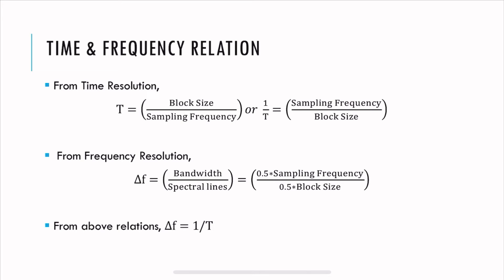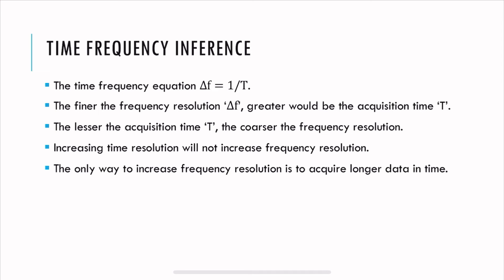Let's derive the relation between time and frequency. From time resolution: T = N / fs, so fs / N is the inverse. From frequency resolution: delta F = bandwidth / spectral lines = 0.5 × fs / (N/2). Combining these gives the important time-frequency equation: delta F = 1/T, or T = 1/delta F. So if you want very fine frequency resolution, the acquisition time must be very high — a larger T means smaller delta F. Conversely, if acquisition time is very low, delta F will be higher, meaning coarse frequency resolution.